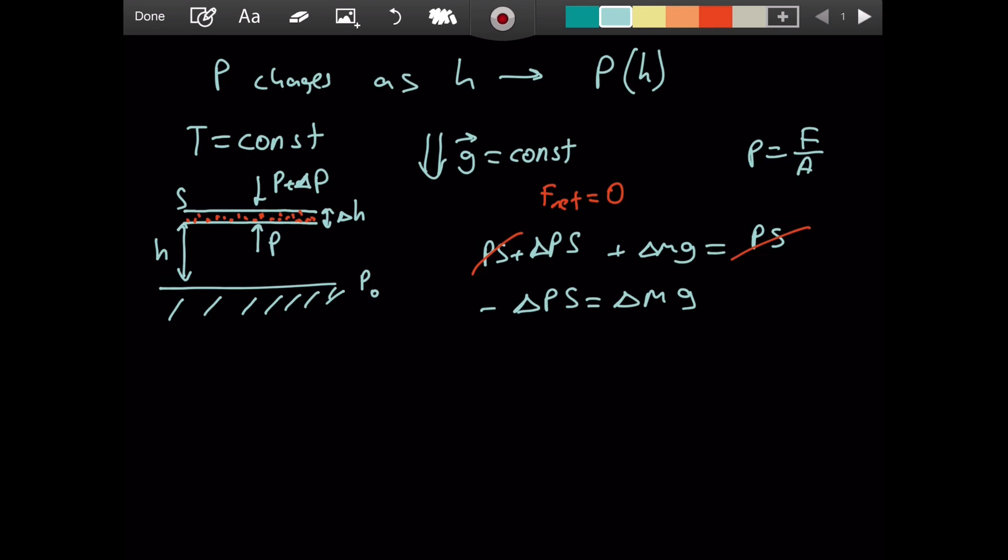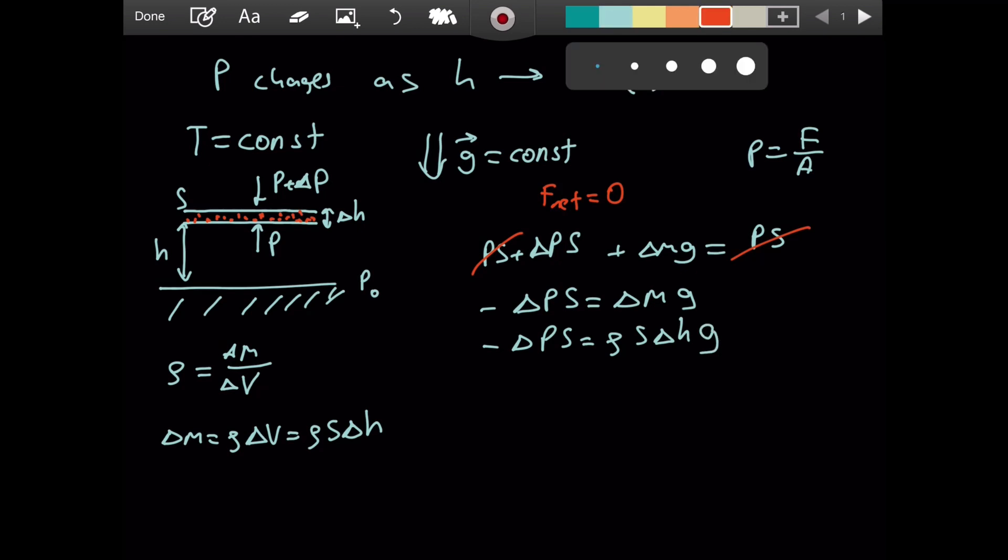I want to express delta M in terms of other quantities. Density is mass per volume, so rho equals delta M over delta V. Delta M equals rho times delta V, which is rho times S times delta H. Substituting gives negative delta P equals rho S delta H g. S cancels, so negative delta P equals rho g delta H.